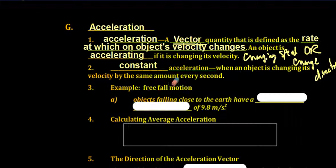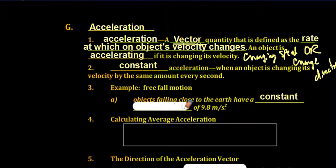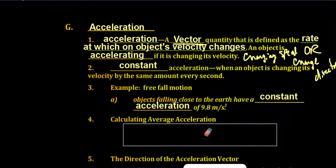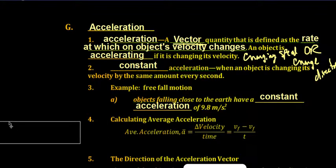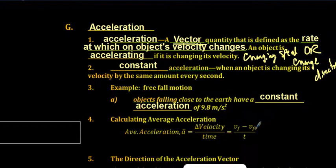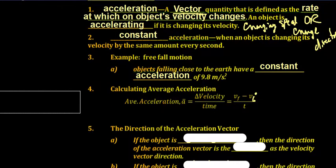An example of constant acceleration is free fall motion. Objects falling close to the Earth have a constant acceleration of 9.8 meters per second squared. Average acceleration is given by the change in velocity over the change in time — that is V final minus V initial, divided by the change in time. Note: there is a typo in the notes; it should be V final minus V initial, not V final minus V final, because that would always be zero.